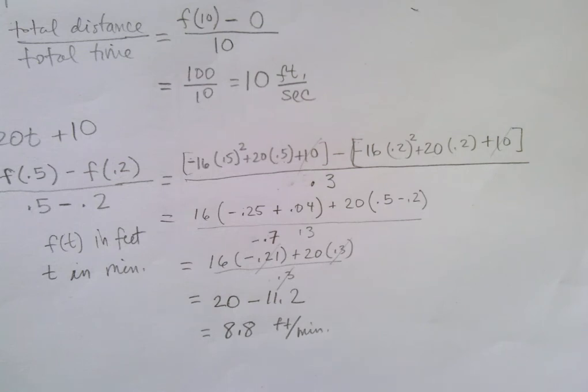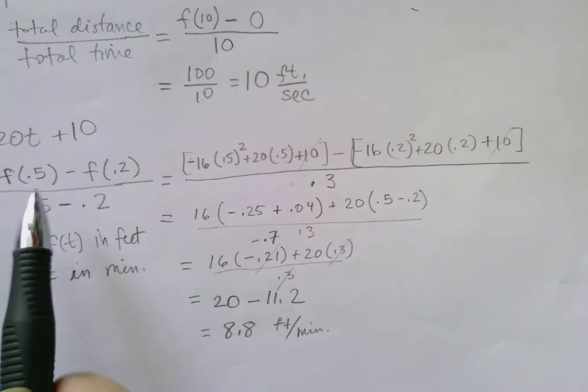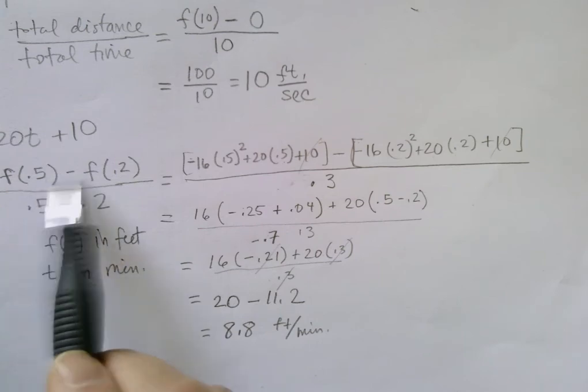Okay, so that is a more complicated computation for average velocity, but remember it's just rise over run, rise over run.